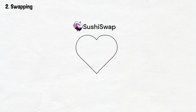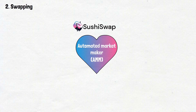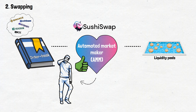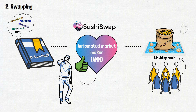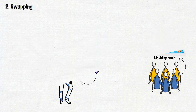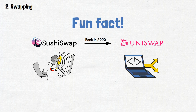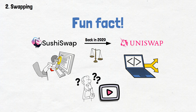Now on to SushiSwap's main function — swapping. The heart of SushiSwap is its automated market maker, or AMM, model. Instead of relying on order books like traditional exchanges, Sushi uses liquidity pools filled with cryptocurrency by users like you and me. Here's a fun fact: SushiSwap looked almost identical to Uniswap when it launched back in 2020, because SushiSwap is actually a code fork of Uniswap! You can watch the dedicated Uniswap video to spot all the differences and similarities between these two DEXs.